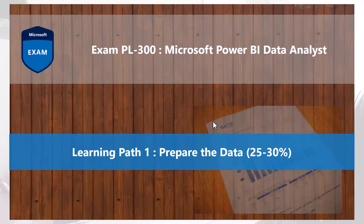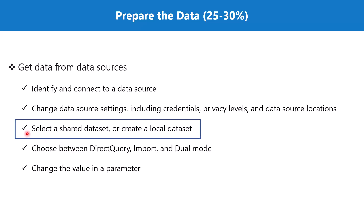Welcome back to the PL 300 exam preparation series where we are exploring the first learning path: Prepare the Data. In this video we are going to discuss the topic 'Select a Shared Dataset or Create a Local Dataset', which is part of the section 'Get Data from Data Sources'. This is a topic we had skipped earlier because we wanted to go through the entire cycle of report development, ending by publishing your Power BI Desktop report to the Power BI service.